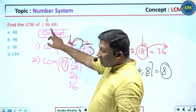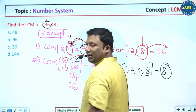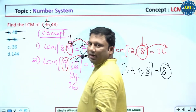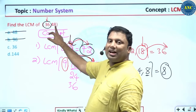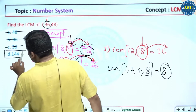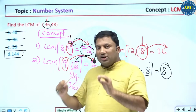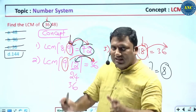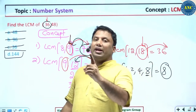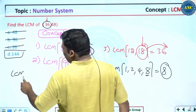Applying both concepts to LCM of 36 and 48: the digital sum of 36 is 9, so the answer's digital sum should be 9. But LCM must be greater than or equal to the largest number, which is 48. So the answer cannot be 36. The answer is 144. Even without knowing all the definitions, understanding these root concepts gives you the answer.